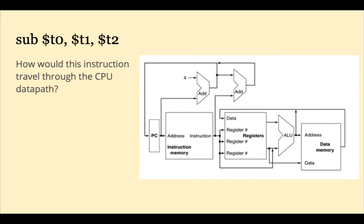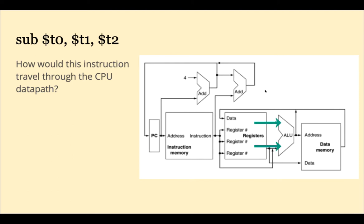Let's think about how a SUB instruction would travel through this data path. The PC program counter is one of the registers in the register file, but it's shown to the left in the diagram to illustrate its role in pointing to the next instruction to be executed. First the instruction is decoded, broken up into the opcode and register fields. The T1 and T2 registers are read from the register file into the ALU. The ALU subtracts T1 minus T2 and writes the result back into the register file in register T0. Meanwhile, the PC has been updated by 4 to point to the next instruction. Any R-type instruction would follow a similar path.